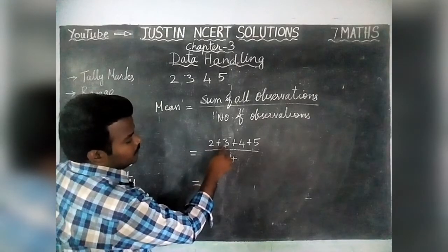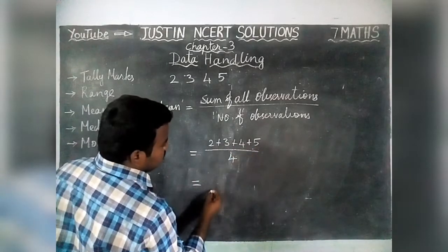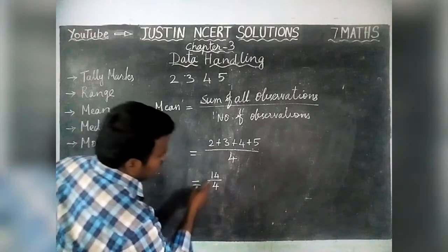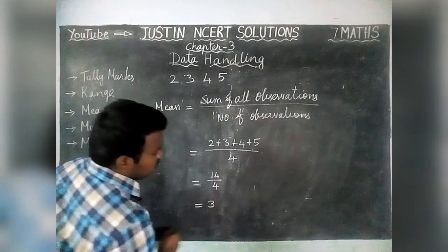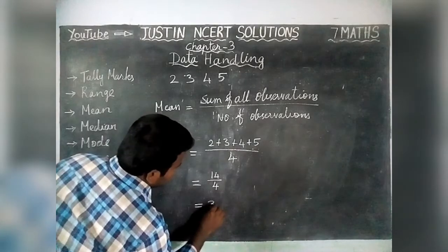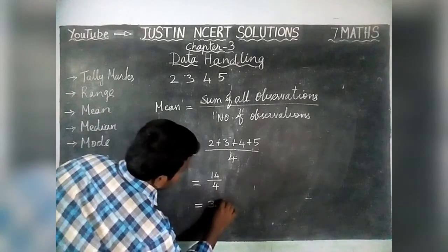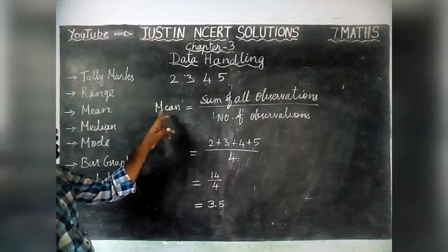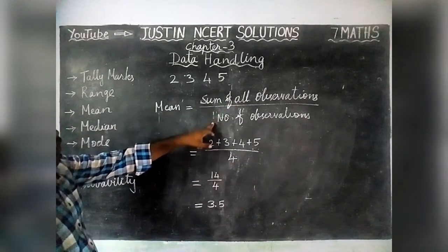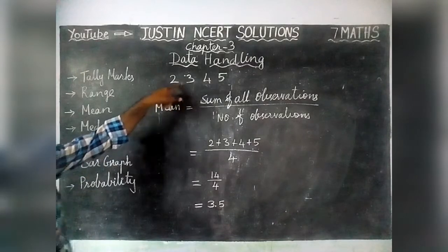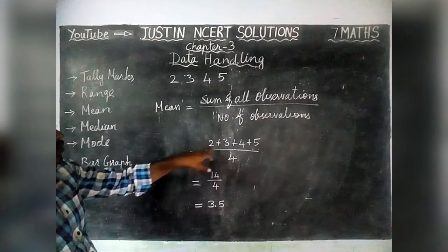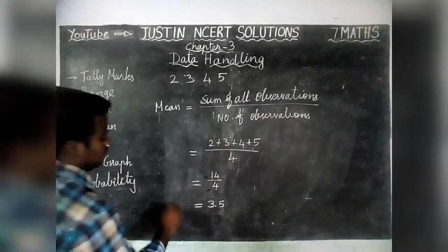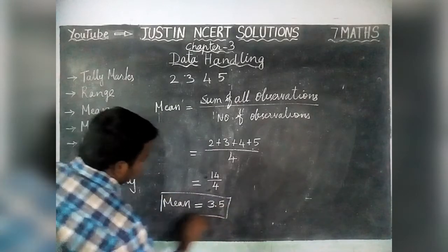So 2 + 3 = 5, 5 + 4 = 9, 9 + 5 = 14, divided by 4. In 14, we have three 4's making 12, with remainder 2. Adding a decimal point: 20 divided by 4 — five 4's are 20. So mean of the given data is 3.5. Therefore mean = sum of all observations divided by number of observations = 14 / 4 = 3.5.